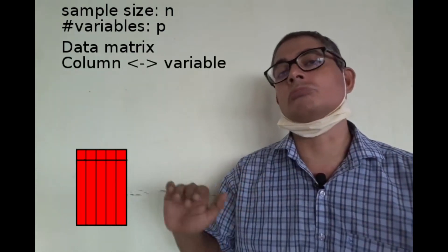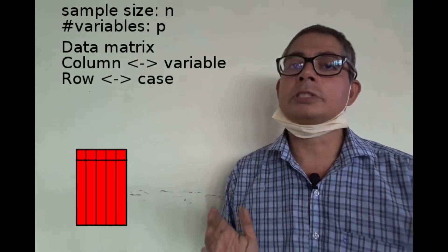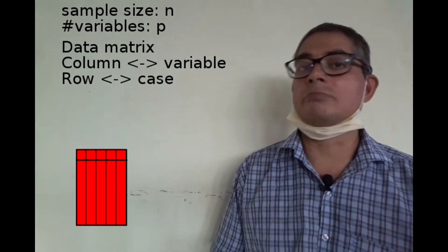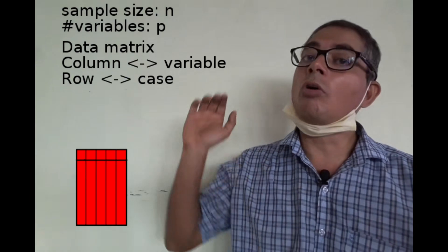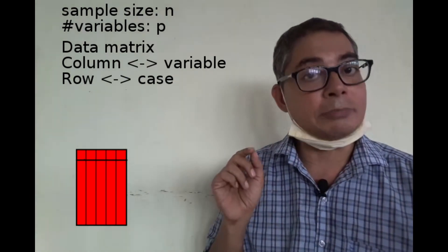The different columns may hold different types of values—some may be continuous, some may be categorical or counting or whatever—but all the values in the same column must be of the same type.